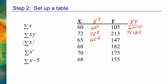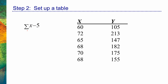For sigma x minus 5, I'm being asked to sum up x and then later subtract 5. I already have a column for x, so I don't need to add anything — I'll sum up those x values and then subtract 5. For the sum of the quantity x minus 5, I need to subtract 5 from every single x value and sum up those difference scores. It will be very helpful to create a column labeled 'x minus 5': 60 minus 5 equals 55, 72 minus 5 equals 67, 65 minus 5 is 60, and so forth. Now it will be easy to sum up these difference scores.